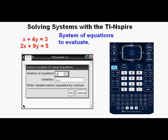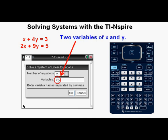We have this system of equations to evaluate. It's x plus 4y equals 3, and 2x plus 9y equals 5. We see that we have two equations here in the number of equations field, so that's okay. And we have the default variables of x and y in the variables field. Since everything is correct, we can tab down to the OK button and press enter.